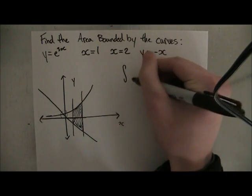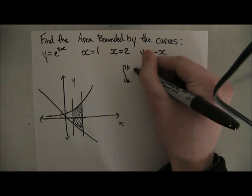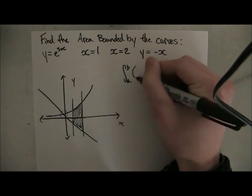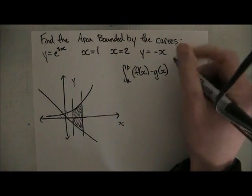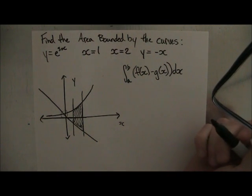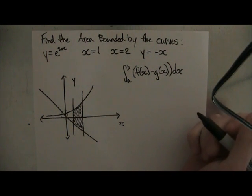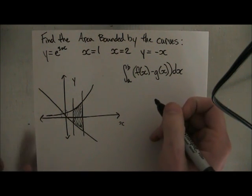So we're going to write our formula, the integral from a to b of f of x minus g of x equals dx. And as you can see, if you've watched all the previous videos, this does get quite repetitive, so it's pretty easy once you get the hang of it. So, now what do we want to do?